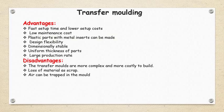The disadvantages of compression molding are removed by transfer molding. Advantages of transfer molding include: fast setup time and lower setup cost, low maintenance cost, plastic parts with metal inserts can be made, design flexibility, dimensionally stable parts, uniform thickness, and large production rate.